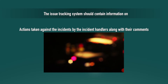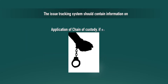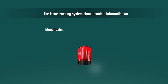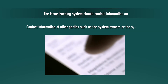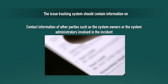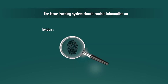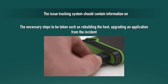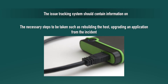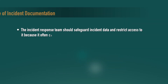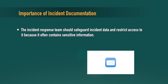The issue tracking system should also include: identification of interrelated incidents; actions taken against the incidents by incident handlers along with their components; application of chain of custody if necessary; identification and assessment of impact on the incident; contact information of other parties such as system owners or administrators involved; evidence gathered during the incident investigation; and the necessary steps to be taken, such as rebuilding the host or upgrading an application.